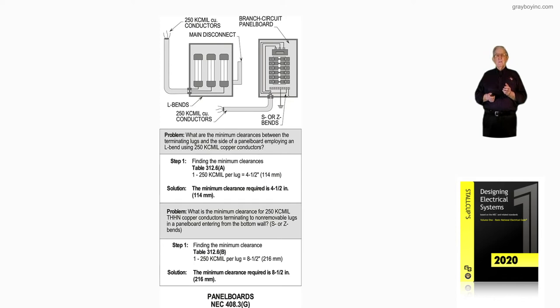The table that is used for the L-bend is Table 312.6A, and notice with that 250 KC mill coming in with an L-bend, it's four and a half inches from the L-bend lug to the bottom of that enclosure. The industry calls that an L-bend, which you can read about in 408.3G in the text.